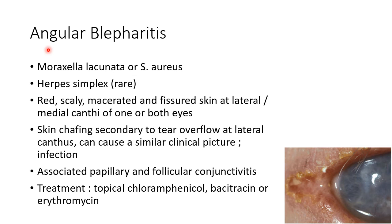Angular blepharitis is usually caused by Moraxella lacunata or Staphylococcus aureus and can rarely be caused by herpes simplex virus. There will be red, scaly, macerated and fissured skin at the lateral or medial canthi of one or both eyes. In some cases, skin chafing secondary to tear overflow at the lateral canthus can cause a similar picture, making the lid more prone to infection. Angular blepharitis is associated with papillary and follicular conjunctivitis. Treatment is with topical chloramphenicol, fusidic acid or erythromycin.